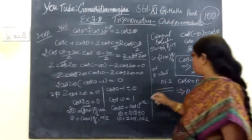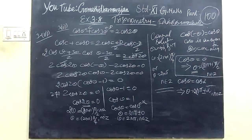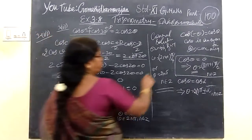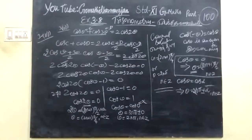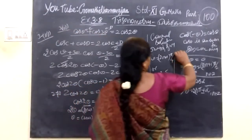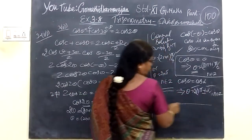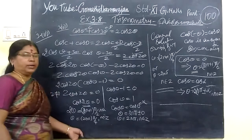So we check the answer one time. Here we write 2nπ, then (2n plus 1)π/2 or π/4. So 2nπ is equal to 0. So this is correct. We see the next question.